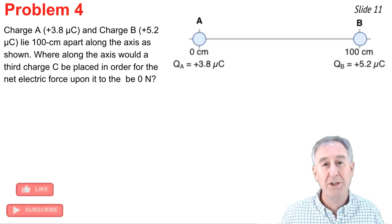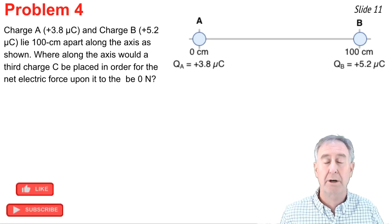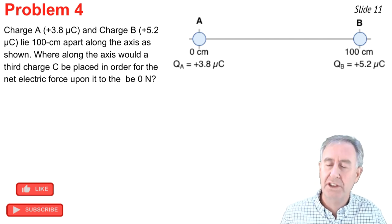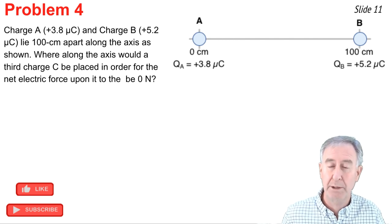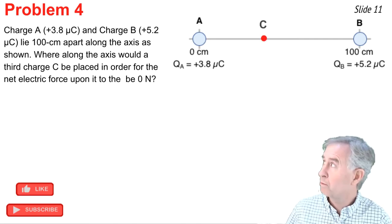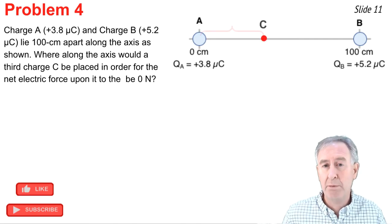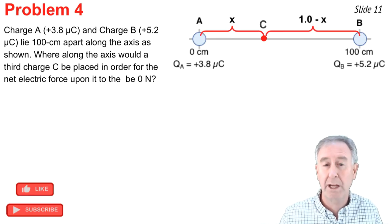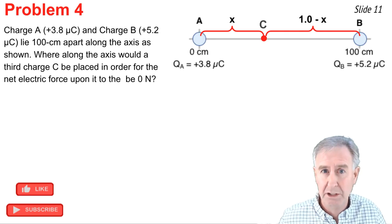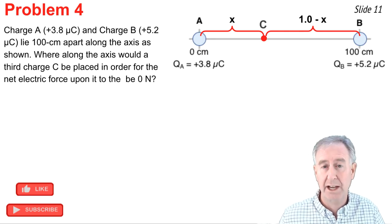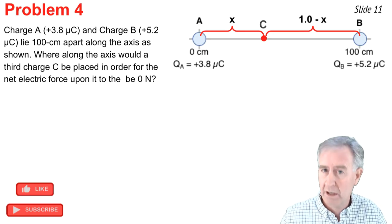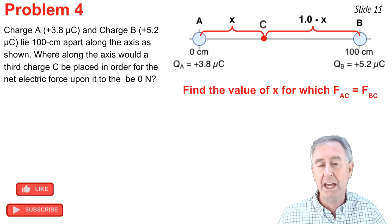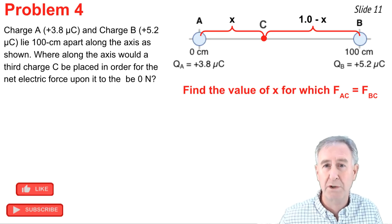In problem four, we have charge A and charge B lying 100 centimeters apart along a line, and we want to know where along this line would you put a third charge such that the net electric force on it would be equal to zero. So I'm thinking of some point where you'd put charge C, and that point would probably be maybe x centimeters from A, and if it's x centimeters from A and A and B are 100 centimeters apart, then it would be 100 centimeters minus x or 1 meter minus x from the other charge. So I'm looking for the value of x for which the force of A on C is balanced by the force of B on C.